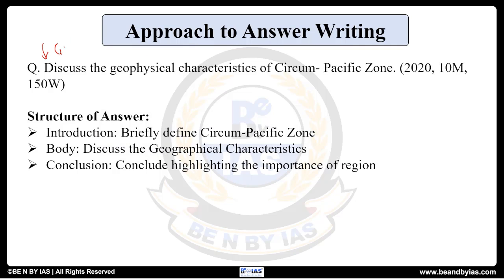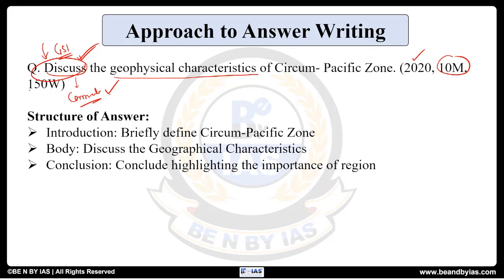Today's question is from GS Paper 1, particularly the Geography section. The question is: 'Discuss the geophysical characteristics of the Circum-Pacific Zone.' This question was asked in the 2020 Mains examination, for 10 marks, and has to be written in 150 words. It is part of GS Paper 1. If you want me to make a video on all the key terms asked in the UPSC Mains examination, put it in the comment section.